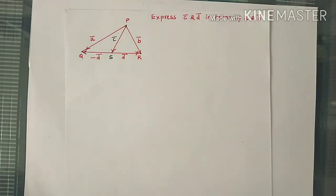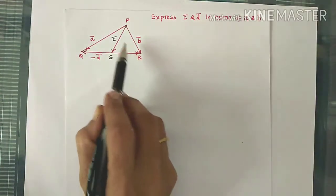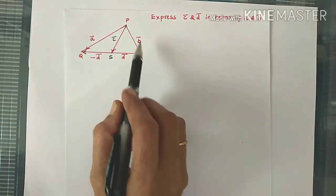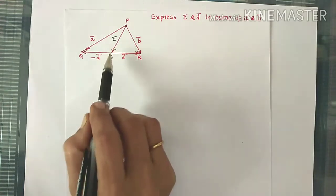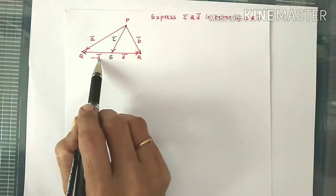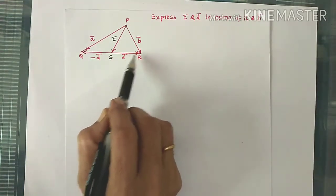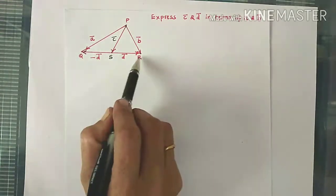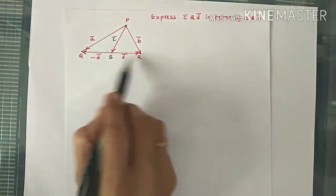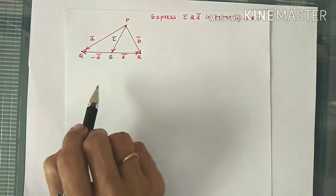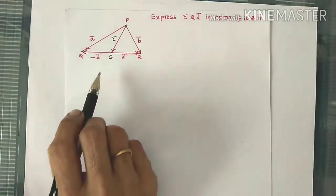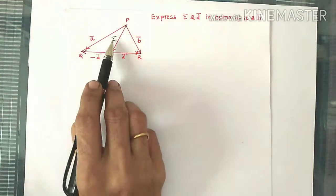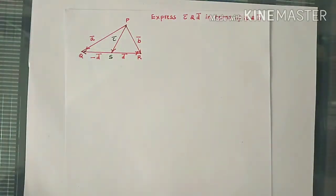Here the question given is: a triangle PQR is given. PQ bar is given as A bar, PR bar is given as B bar, PS bar is C bar, SQ bar is minus D bar and SR bar is D bar because both have opposite directions. That means S is the midpoint of QR, since we have D bar and minus D bar — equal magnitude but opposite directions. So we have to find out C bar and D bar in terms of A bar and B bar.